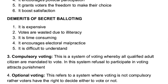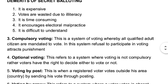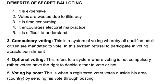Let's look at the demerits or disadvantages of the secret ballot voting system. Number one, it is expensive in nature — in Nigeria's case, you have to print so many things, buy ballot boxes, and do a lot of organization to conduct the election, so a lot of money goes out. Number two, votes are wasted due to illiteracy. Number three, it is time consuming. Number four, it encourages electoral malpractice — a lot of electoral malpractice can be experienced. Number five, it is difficult to understand.